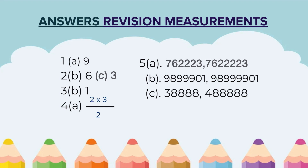Question 5: Completing the pattern. Part A: you will get 762223 and 7622223. Part B: you will get 9899901 and 9899901. Part C: you will get 3 followed by 8888 and 4 followed by 88888.